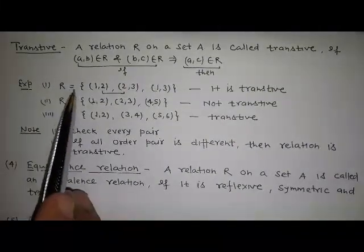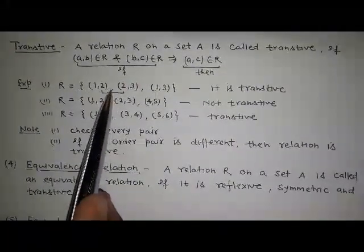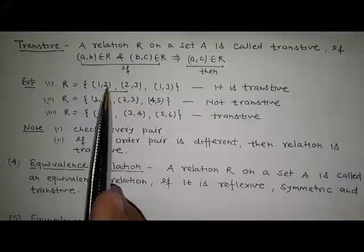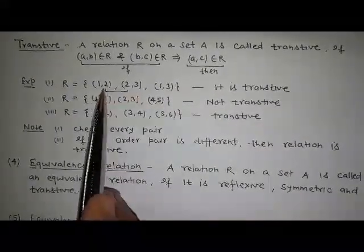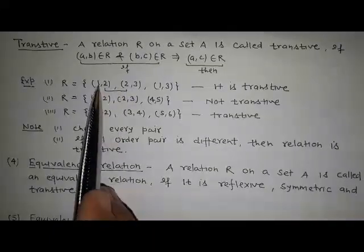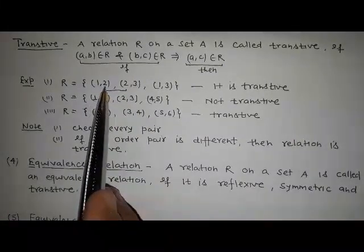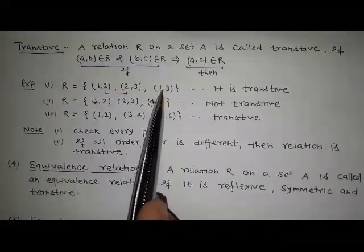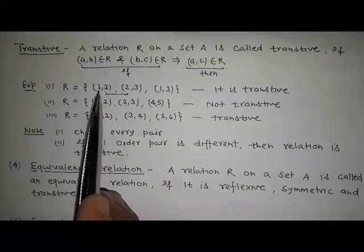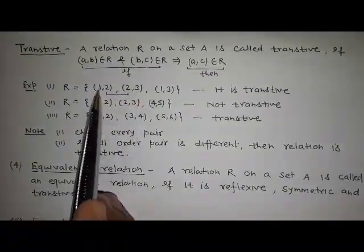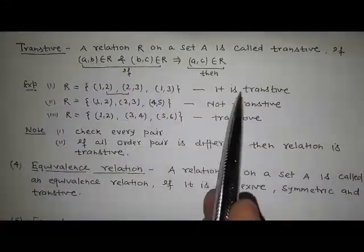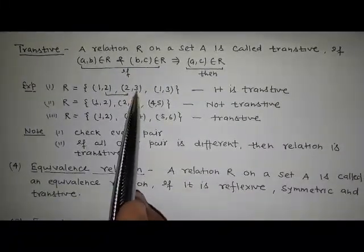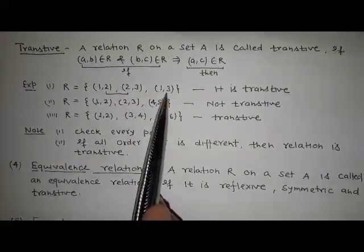For example, relation R = {(1,2), (2,3), (1,3)} is transitive because (1,2) is here and (2,3) is here — the second element of the first ordered pair equals the first element of the second ordered pair — and (1,3) is also present. So if (1,2) is present and (2,3) is present, then (1,3) must also be present, and it is. That's why it is transitive.